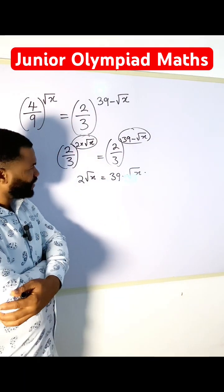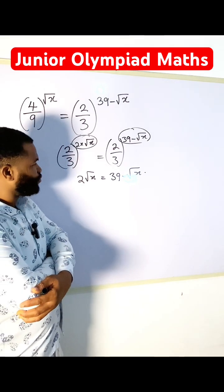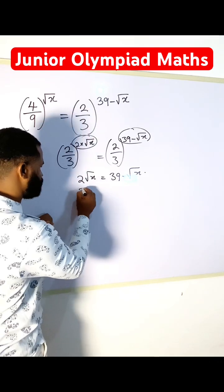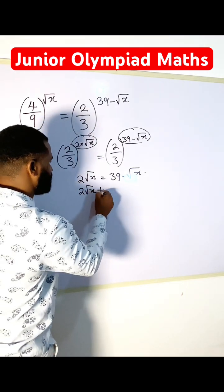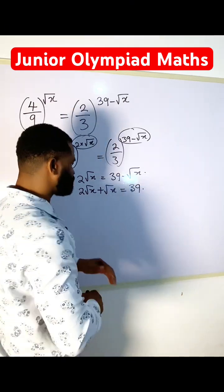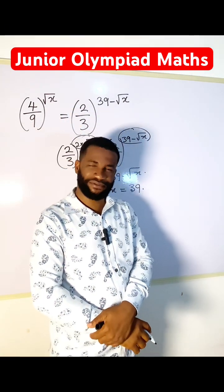At this point, I am going to take like terms. So this is 2 root x plus root x, and that is going to be equal to 39. So you see, what should I do next?